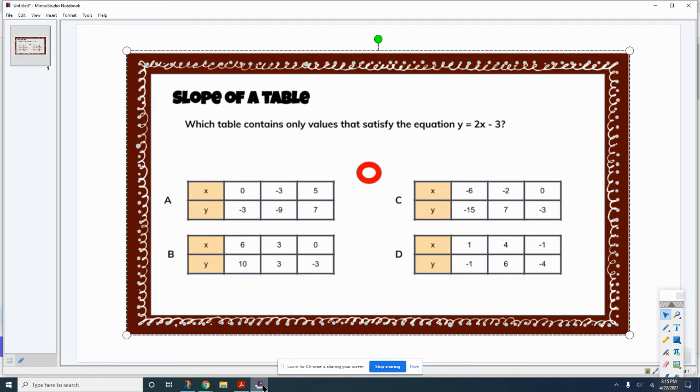Okay? So it's the same thing, it's just flipped backwards. So which table contains only values that satisfy the equation y equals 2x minus 3?